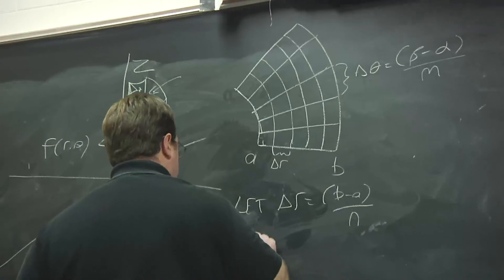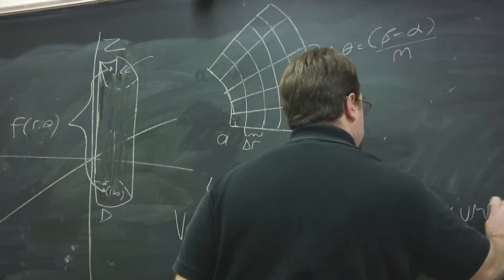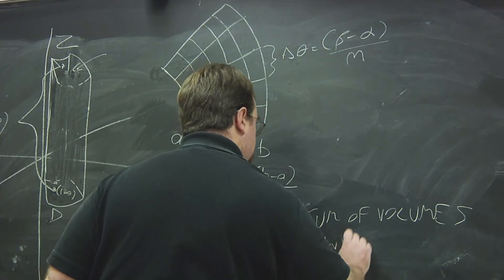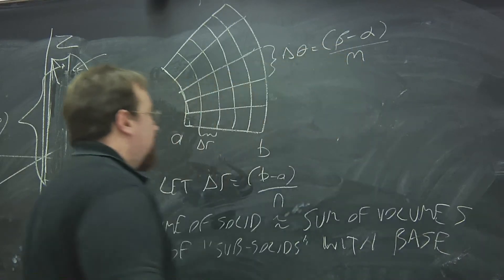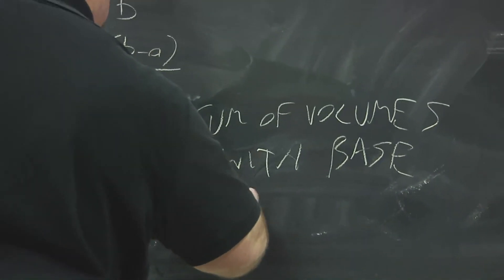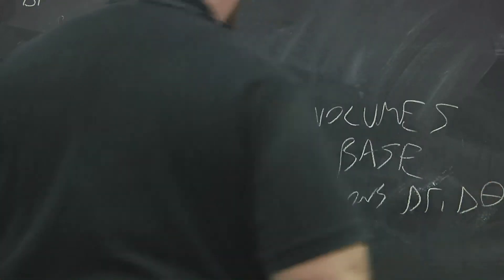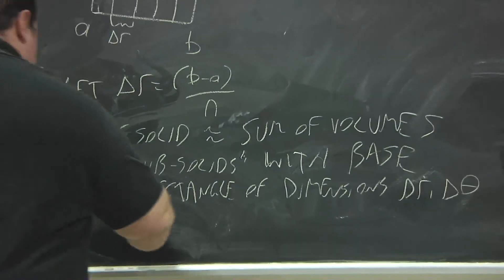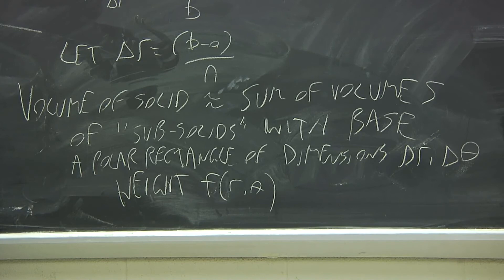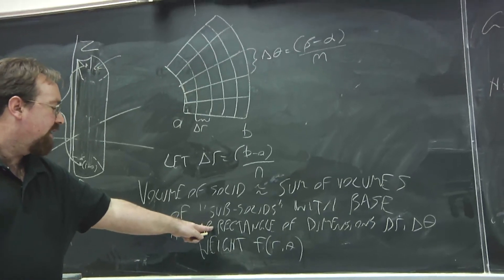Now, the volume of the solid is going to be roughly a sum of the volumes of, for lack of a better word, what I'll call sub-solids, with a base being a polar rectangle of dimensions delta r and delta theta. And the height is given by a function f of r theta that defines z. Now we're going to get the areas of these polar rectangles. So that's what we need. We need the area of this polar rectangle, and then we'll just multiply it by the height.